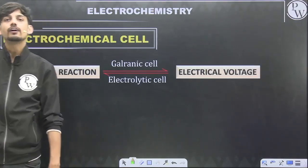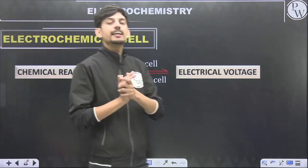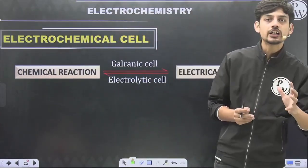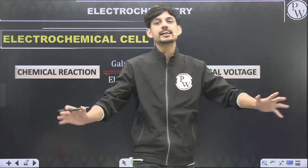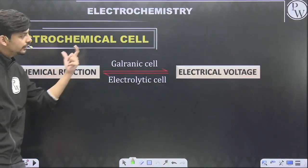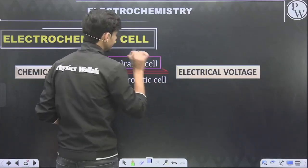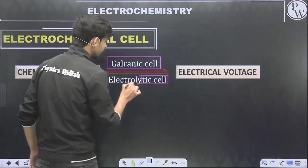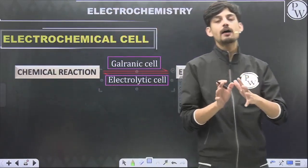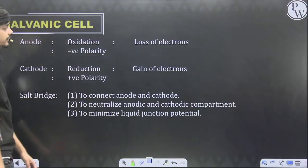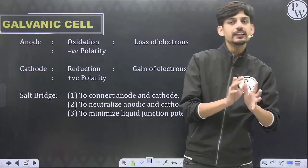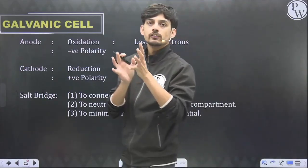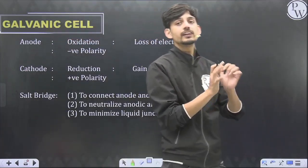Now let's move to the next chapter: electrochemistry. Electrochemistry involves the discussion of electrochemical cells — any cell which can convert electrical energy into chemical energy or vice versa. We divide the chapter into two sections: conversion of chemical energy (reaction) into electrical voltage — such cells are known as galvanic cells — and conversion of voltage into chemical energy or reaction — such cells are called electrolytic cells. A galvanic cell has two compartments: one where oxidation occurs (anode) and one where reduction occurs (cathode).